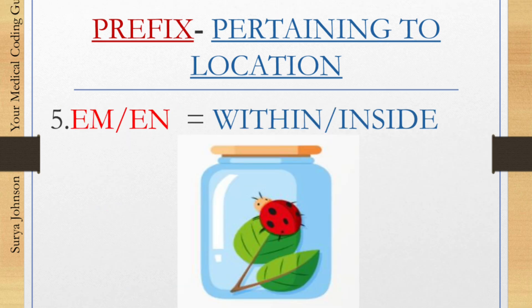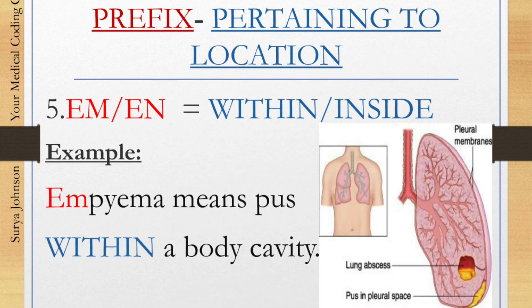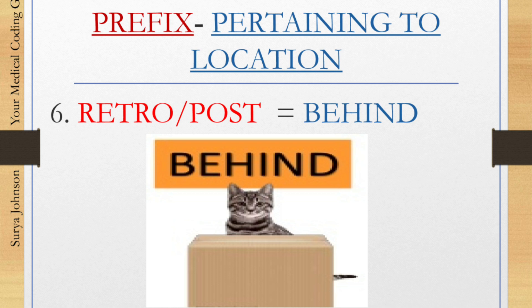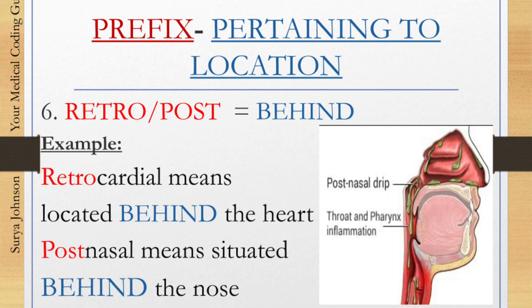Number five: 'em' and 'en.' These are prefixes which mean within or inside, similar to intra and endo. Example: empyema — that means pus within a body cavity. Number six: 'retro' and 'post.' These are prefixes which mean behind. Retrocardial means located behind the heart. For post, example: post-nasal, meaning situated behind the nose.